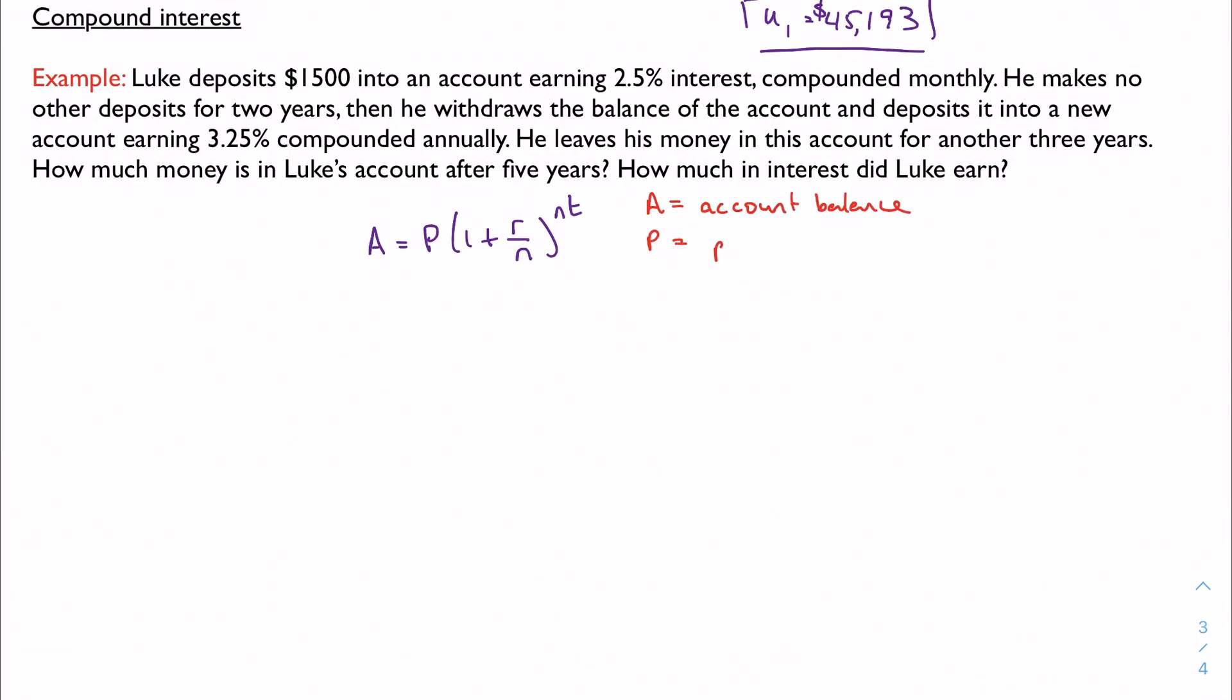And A is my account balance. P is my principal. R is my interest rate as a decimal. N is a little special. N is the number of times interest is calculated per year. And then T is time in years. So let's dive into the account. This is going to be a little more complicated than just using the formula. But that's okay.